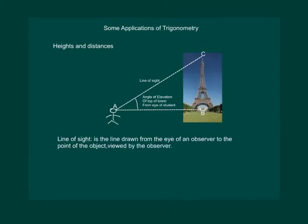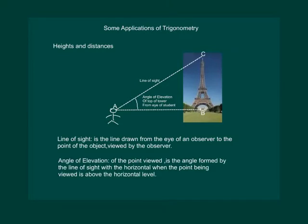Hence, we can say that the line of sight is the line drawn from the eye of an observer to the point of the object viewed by the observer. And the angle of elevation of the point viewed is the angle formed by the line of sight with the horizontal when the point being viewed is above the horizontal level — that is the case when we raise our head to look at the object. In simple words, when we raise our head to see something which is taller than us or which is in the sky, the angle formed with the horizontal is the angle of elevation.